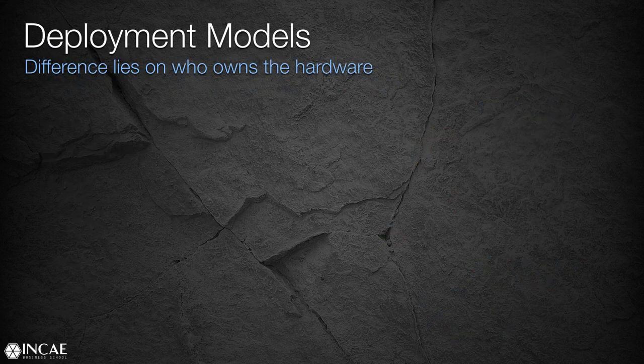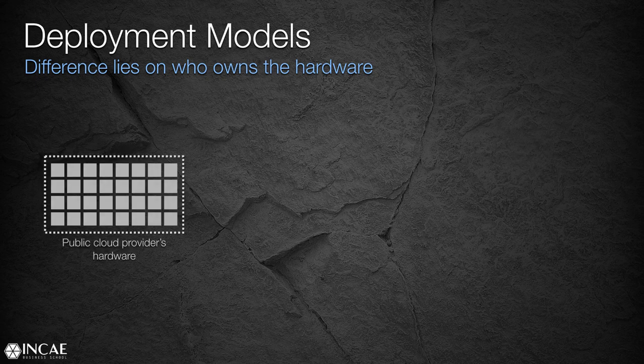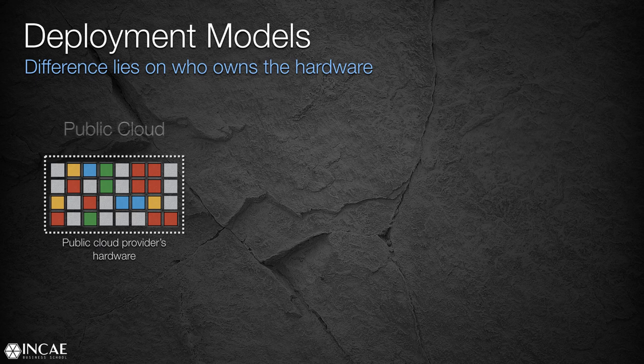Now let's talk about the deployment models. The difference between them is going to be based on who owns the hardware. Let's assume we're accessing the offering of a public cloud infrastructure provider. What makes it public is that the servers — the virtual hardware — are available for anyone in the world. This is an offering where anyone can go in with a credit card and access a virtual server. For any given organization, we don't know who our neighbors are — who other organizations might be making use of the same physical host. This is what we call a public cloud offering.